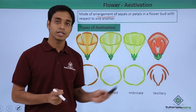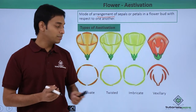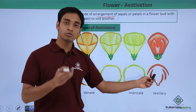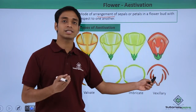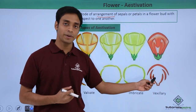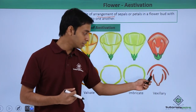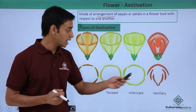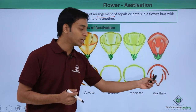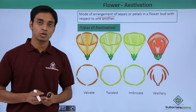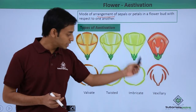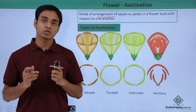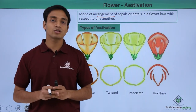The third type of petal in the vexillary arrangement is known as the keel. It consists of the two anteriormost and smallest petals, which are fused with one another and overlapped by the wings.